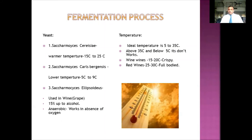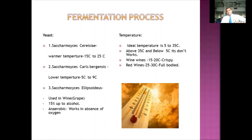There are three different types of commercially used cultured yeast: Saccharomyces cerevisiae, Saccharomyces carlsbergensis, and Saccharomyces ellipsoideus. These three types have different impacts on the fermentation process and produce different quality drinks. For example, Saccharomyces cerevisiae is used to make stronger versions of beer, and it activates only at warmer temperatures of 15 to 25 degrees.